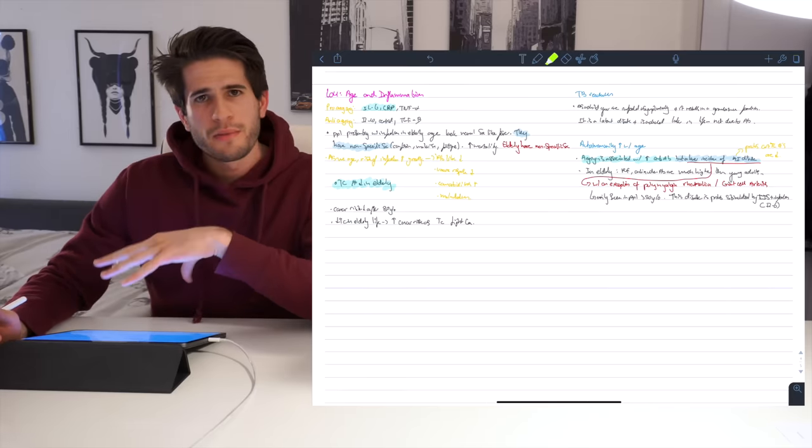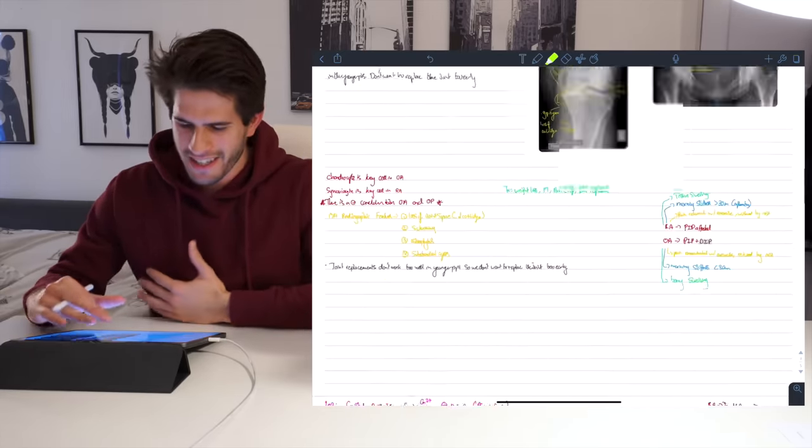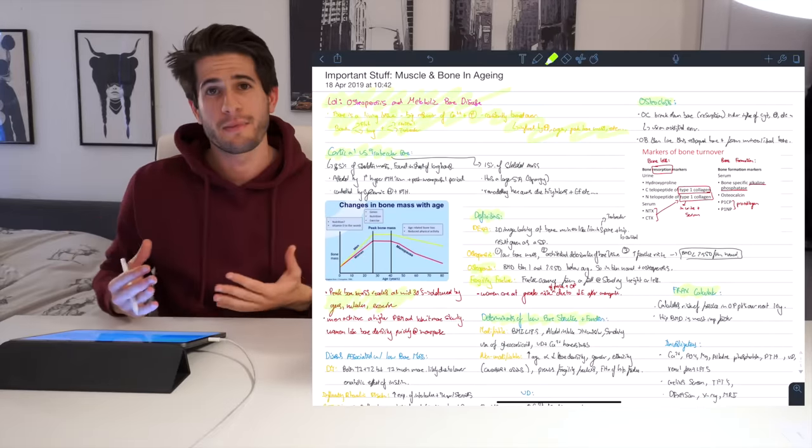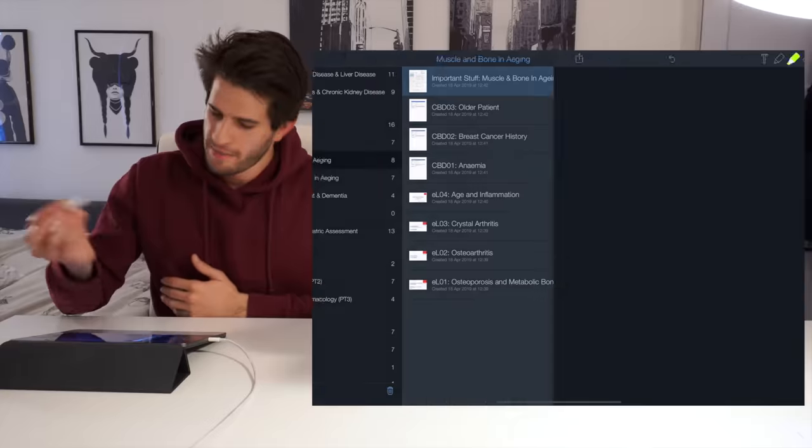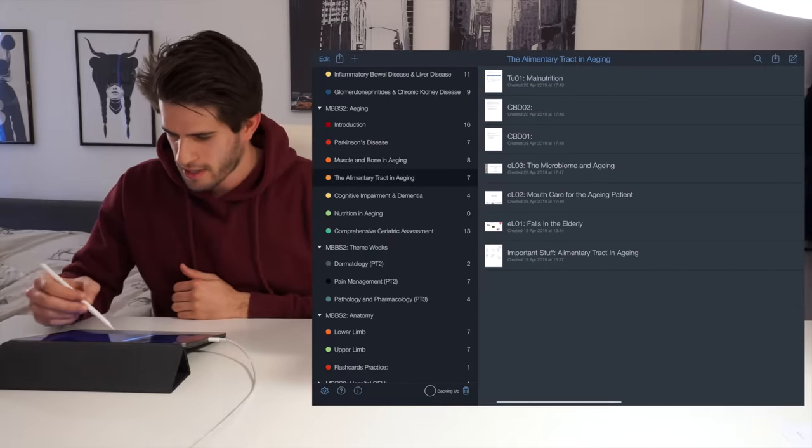So yeah, I think that pretty much sums it up for my lectures. All of my lecture notes look exactly the same. They all have this exact same color scheme, the exact three columns. Let's, for example, just take a look at the next subject over here.